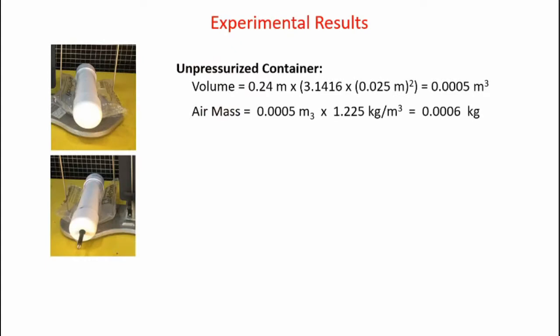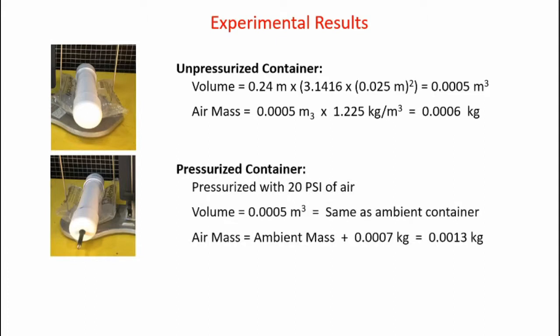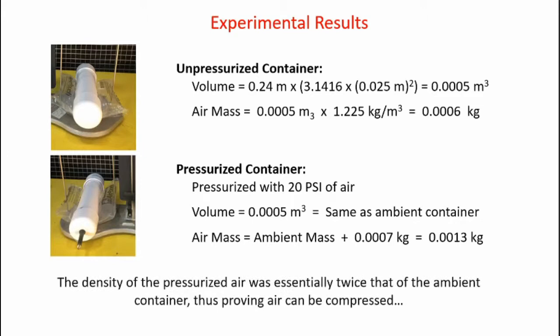Now I'll calculate the density of the air inside each container. The volume of each container is 0.0005 cubic meters. The unpressurized air mass is density times volume, or 0.0006 kilograms. For the pressurized container at 20 psi, the volume is the same — 0.0005 cubic meters — and the air mass is the ambient air mass plus the additional air added, which gives 0.0013 kilograms. That's twice as much as the unpressurized container. The density of the pressurized container was essentially twice that of the ambient container, thus proving that air can be compressed.